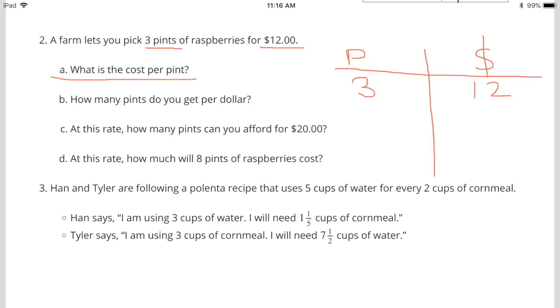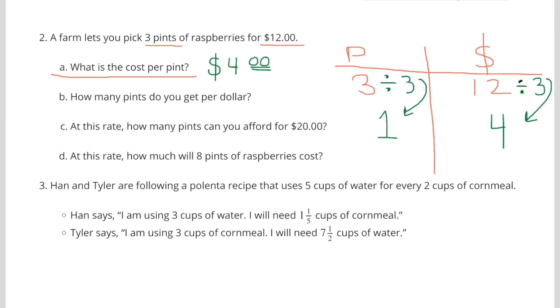Number 2. A farm lets you pick 3 pints of raspberries for $12. So I made a table, the P stands for pints, and the dollar sign stands for dollars. 3 pints for $12. A. What is the cost per pint? Divide 3 by 3 and you get 1 pint. Divide 12 by 3 and you get $4. 1 pint for $4.